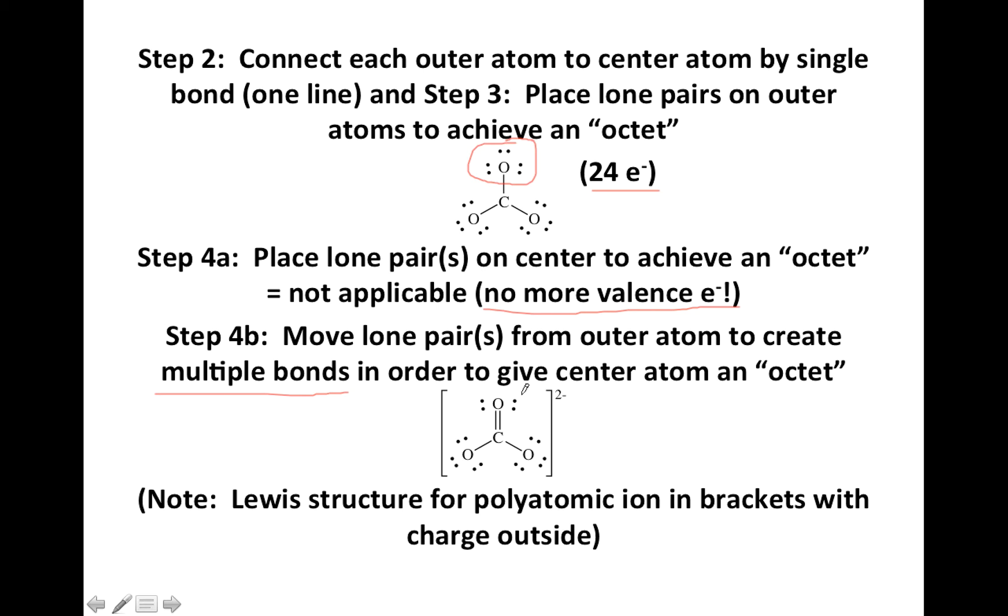When you move a pair from the outside, you give the center atom two more, but you don't take them away from the outside. So you maintain the same total number of electrons, but you've added two to the center.